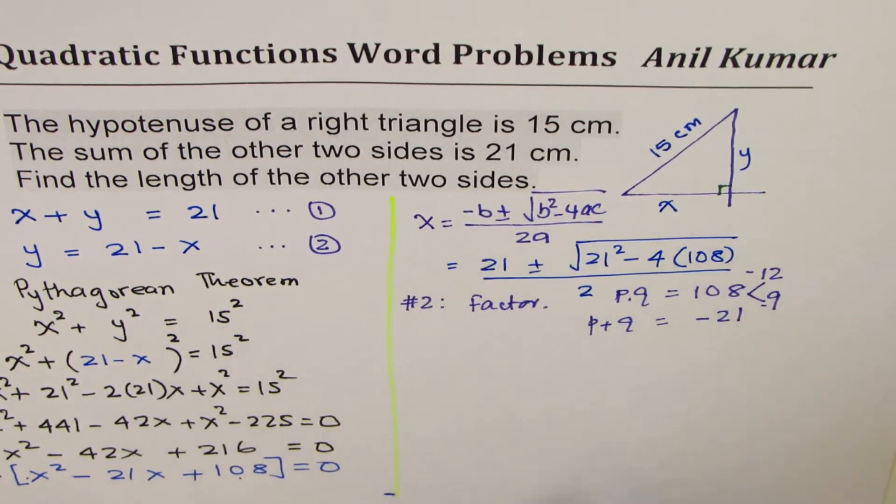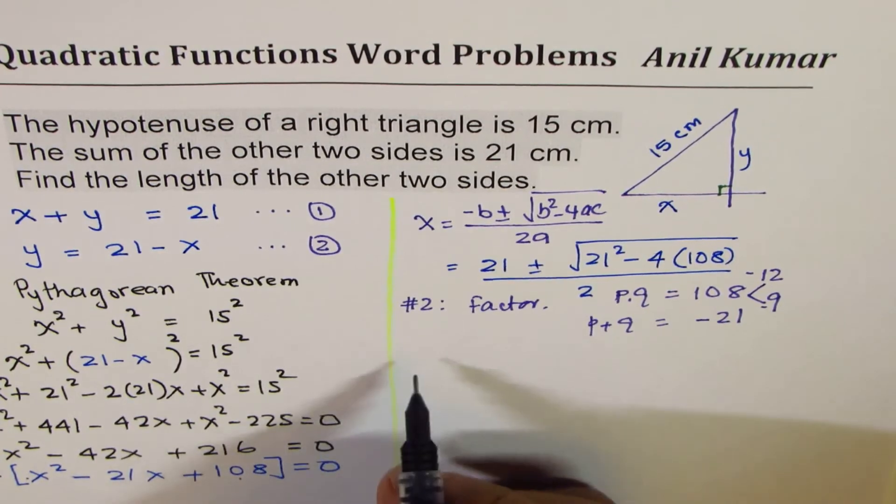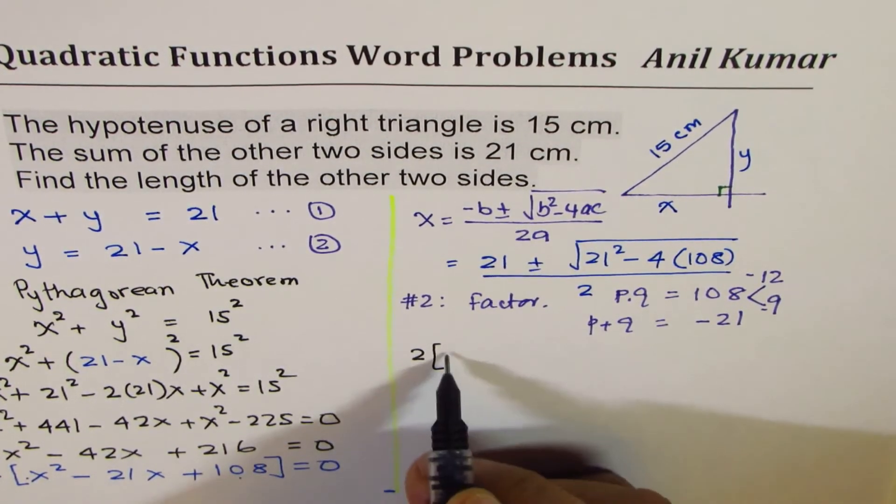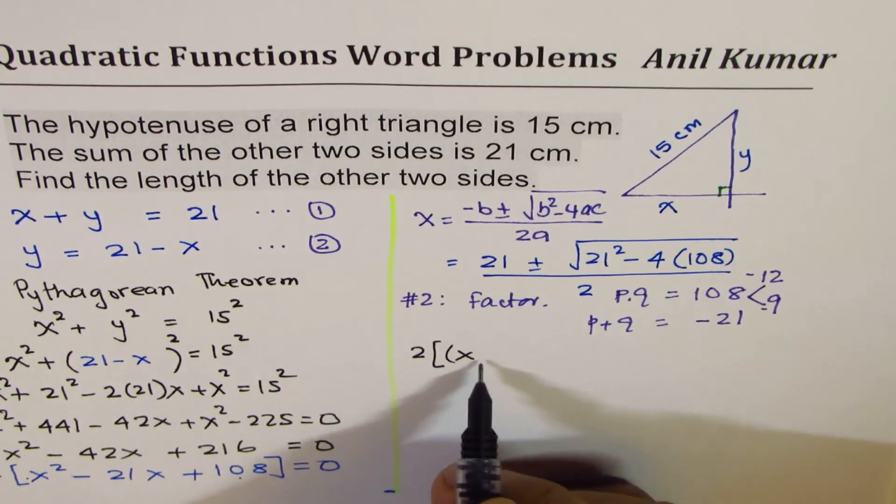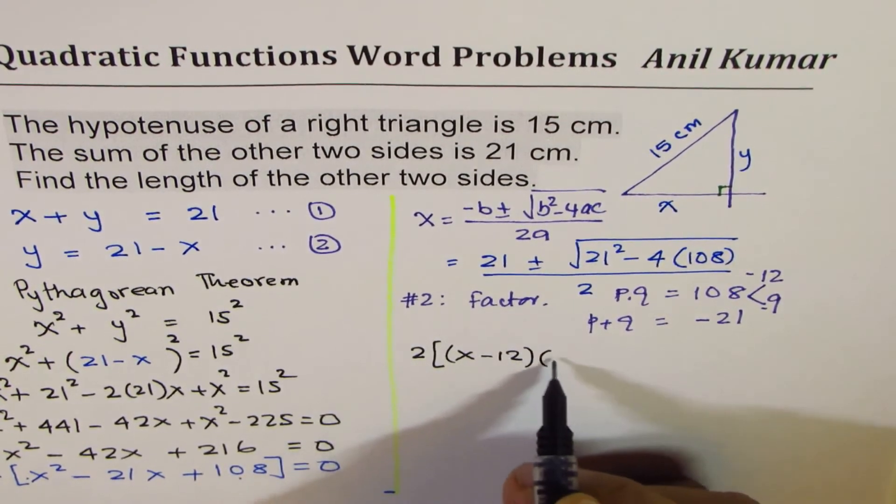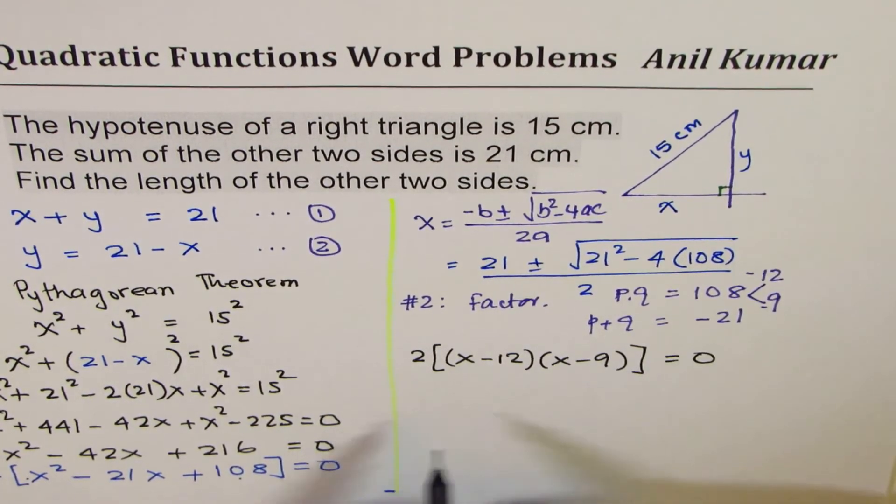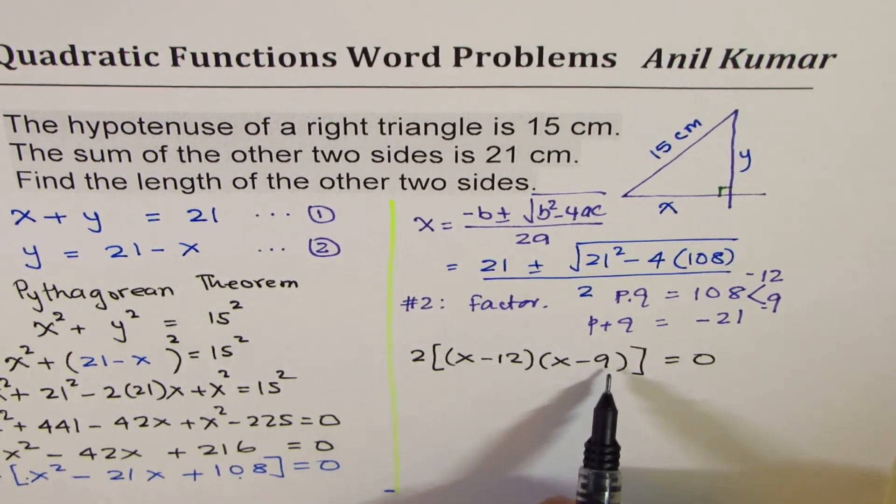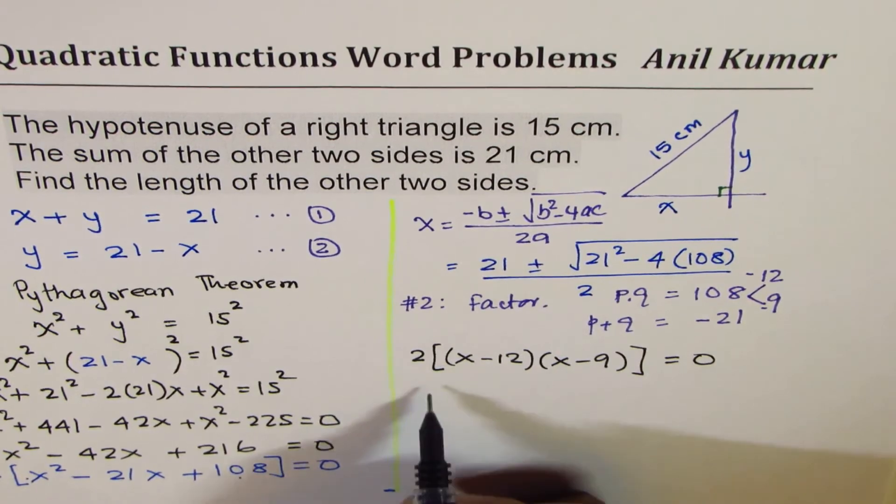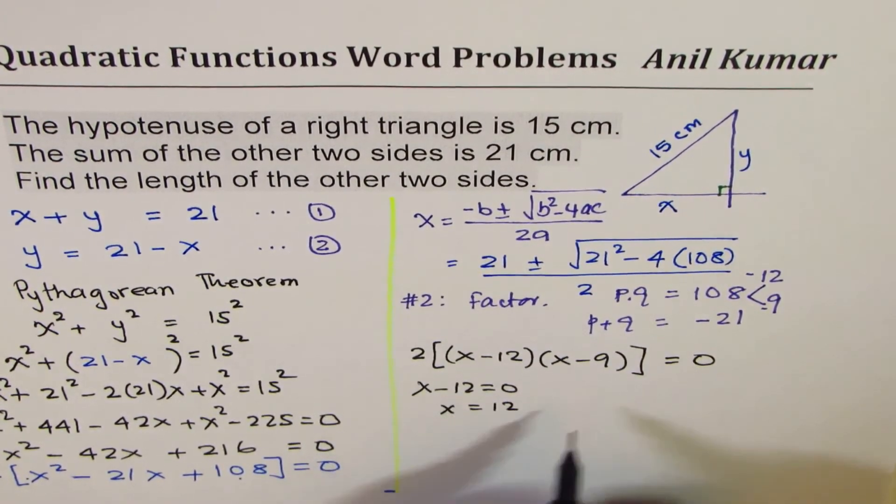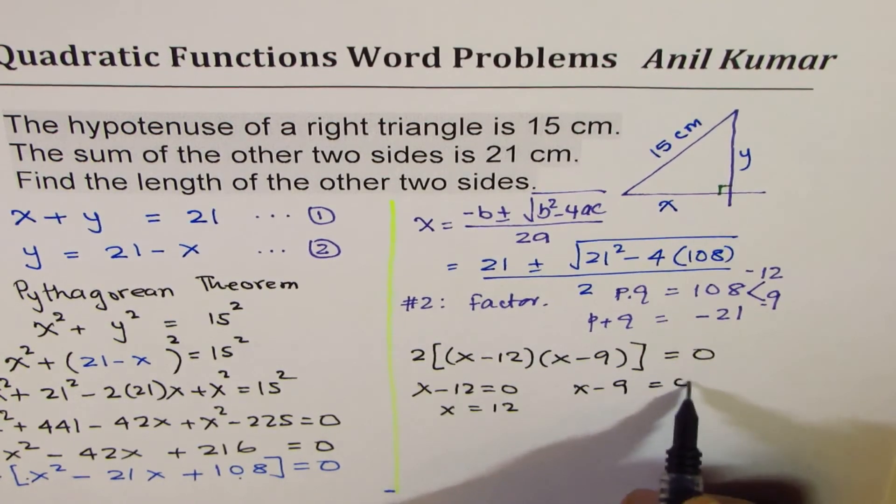Let me factor and do it. What we get here is 2 times (x - 12)(x - 9) = 0. When you write in factored form, 2 cannot be 0. However, x - 12 could be 0, that gives you x = 12. x - 9 could be 0 at x = 9.